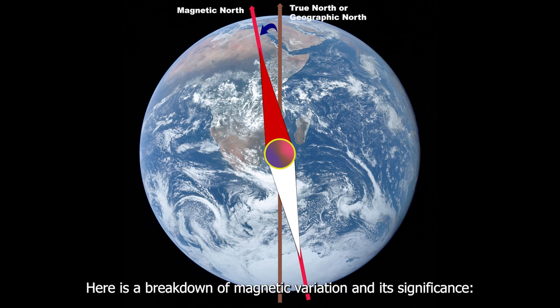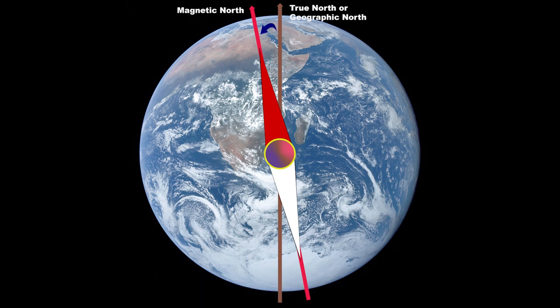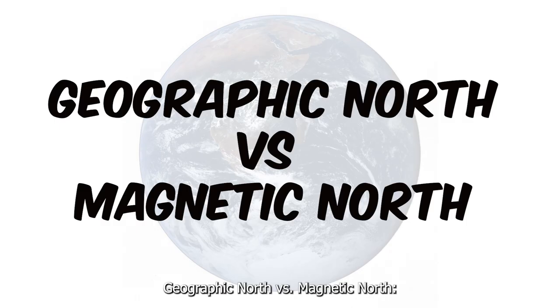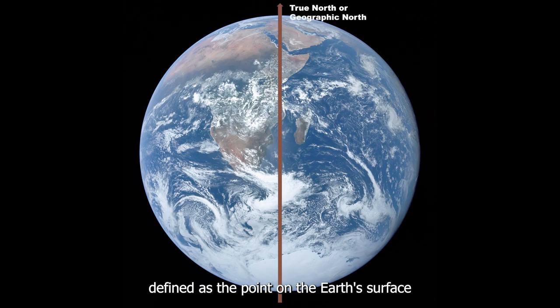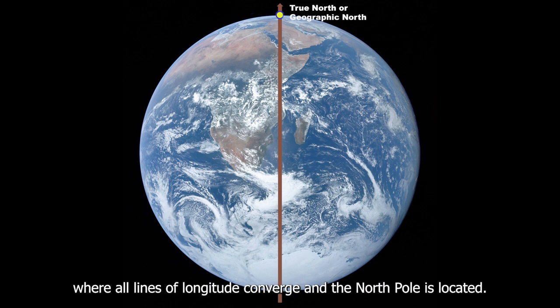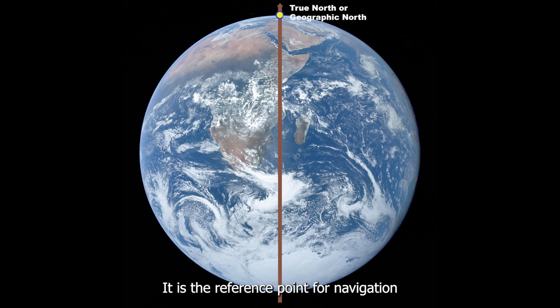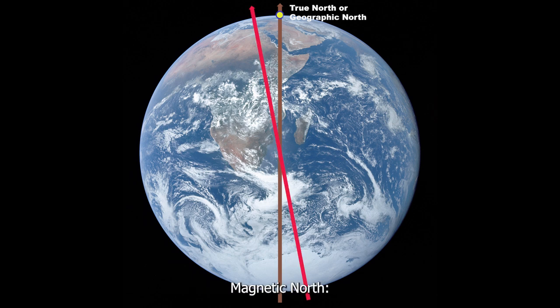Geographic north is the true north, defined as the point on the earth's surface where all lines of longitude converge — where the north pole is located. It is the reference point for navigation when using maps and charts.